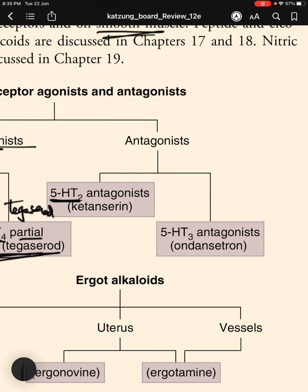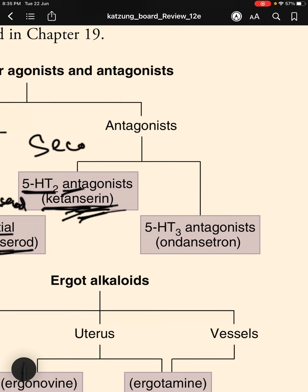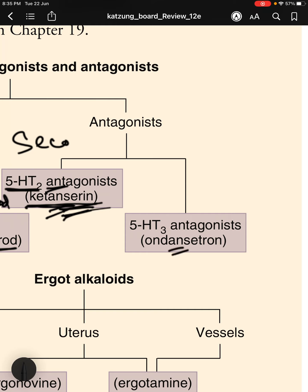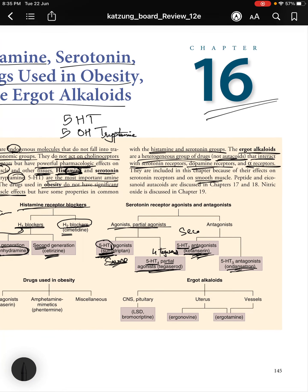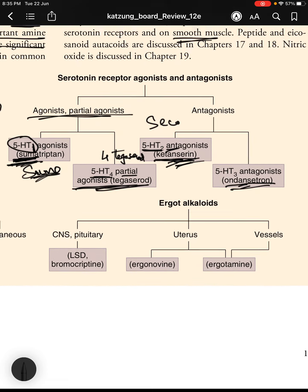For antagonists: 5-HT2 antagonists include ketanserin — note 'an' in the name suggesting antagonist. 5-HT3 antagonists include ondansetron. To summarize: 5-HT1 is an agonist, 5-HT2 and 5-HT3 are antagonists, and 5-HT4 has partial agonists.